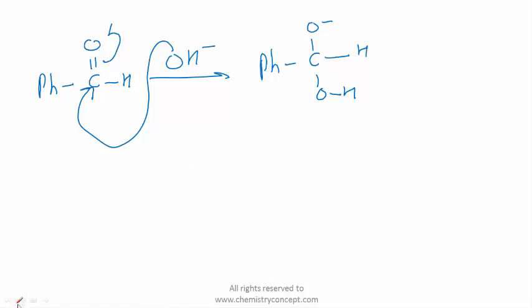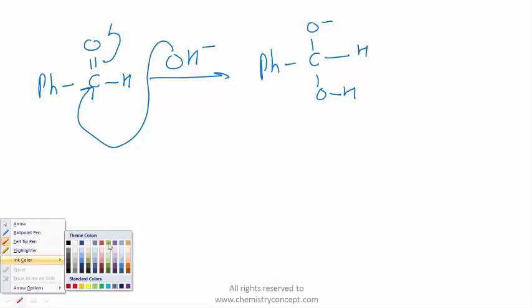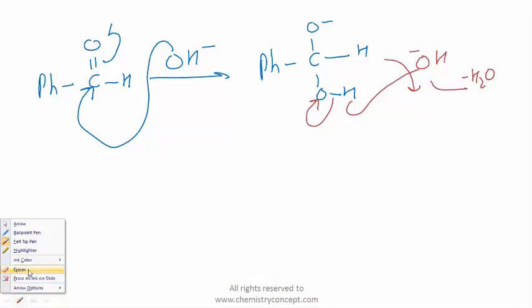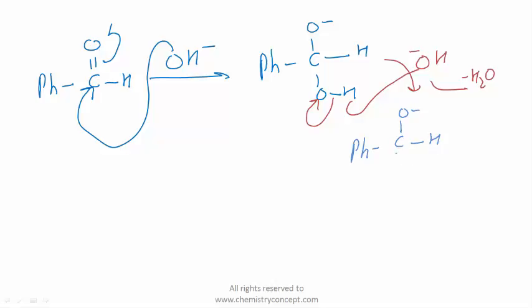In the next step, there is another OH group, another base. Now this will move here, and the hydrogen will come out with water in the form of water. We will be left with again Ph-C-O⁻, with O⁻ on both sides.